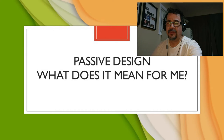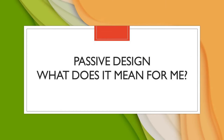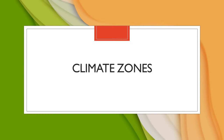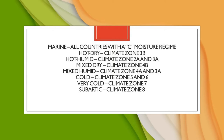It has to do with the climate. We all live in different climate zones. Depending on where you're located, you may be in a hot arid desert or subtropical environment. We have several classifications here: marine, hot dry, hot humid, mixed dry, mixed humid, cold, very cold, and the arctic.